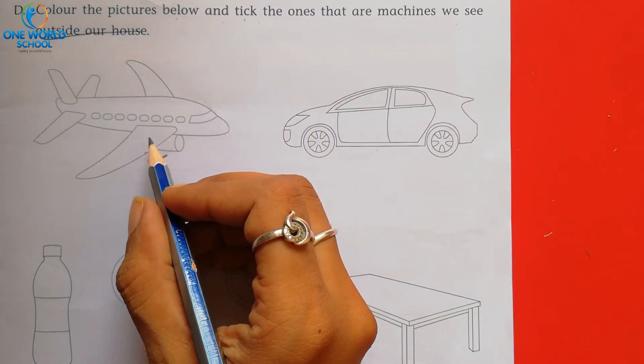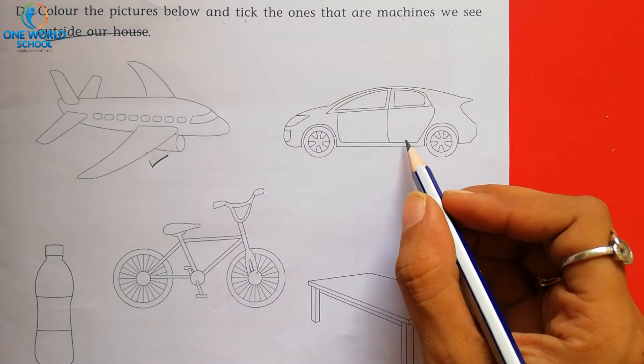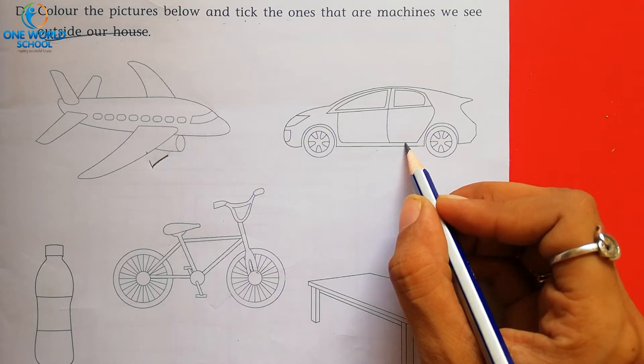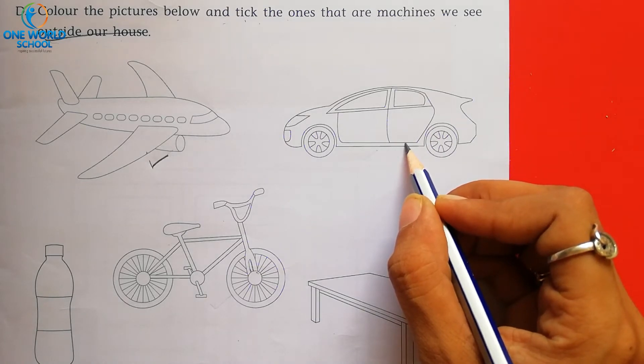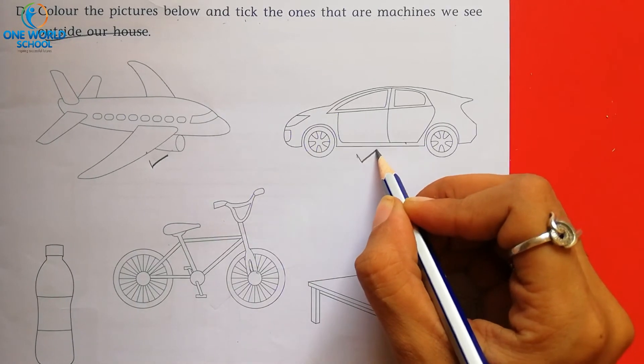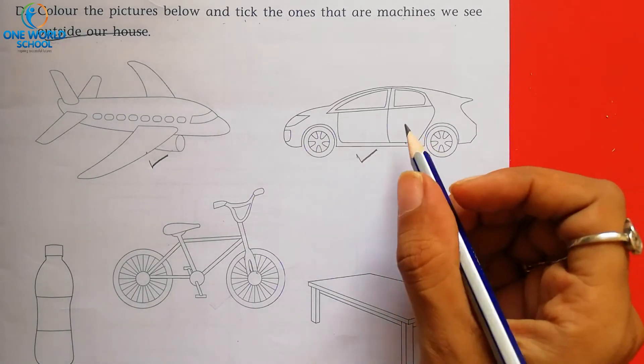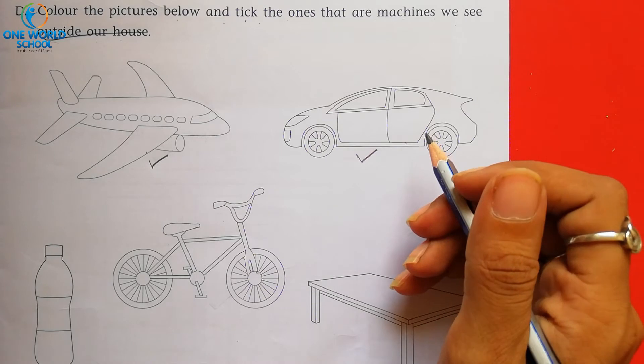Okay, now number 2. Car. Car we can outside. Where is the car? Outside. Very good! So we have to tick here. And the car has the favorite colors.